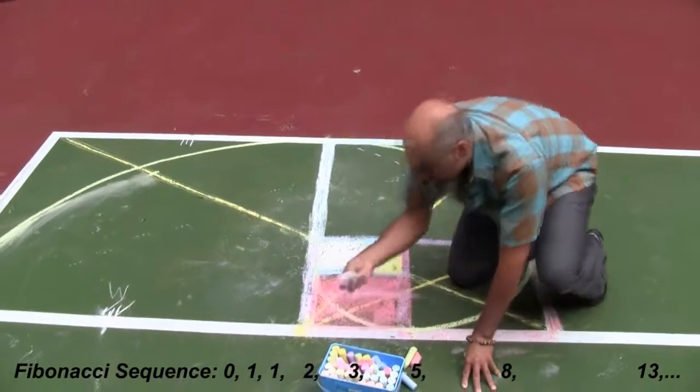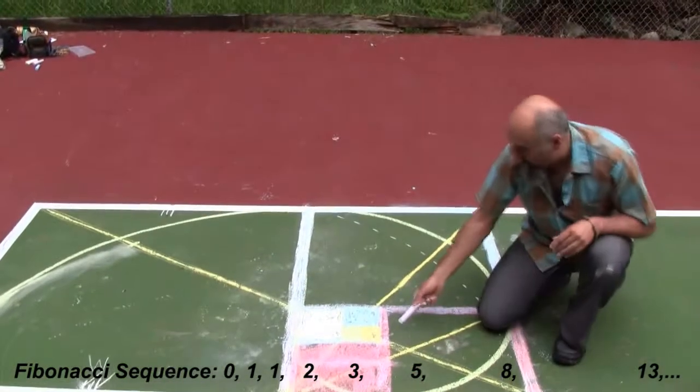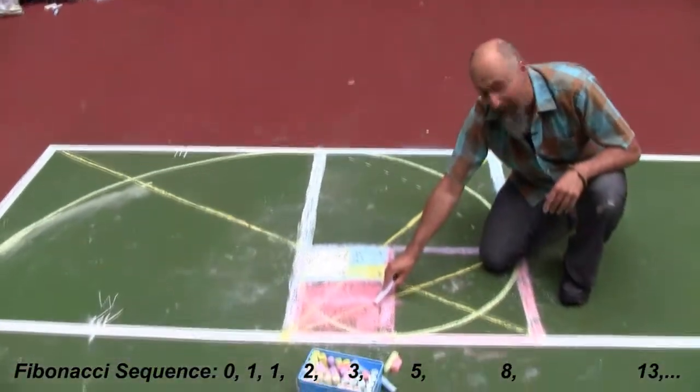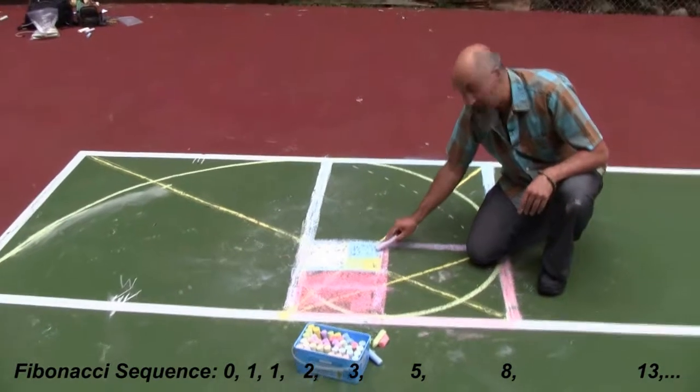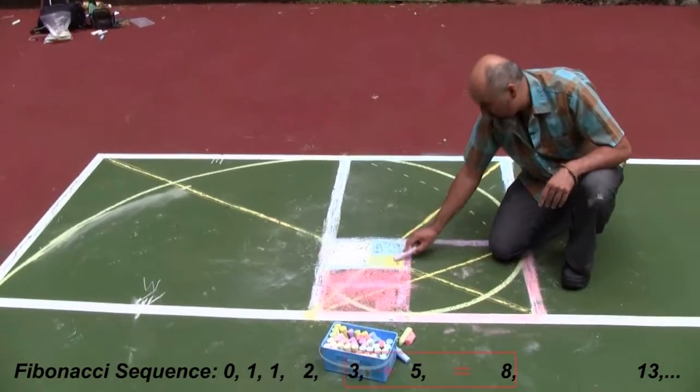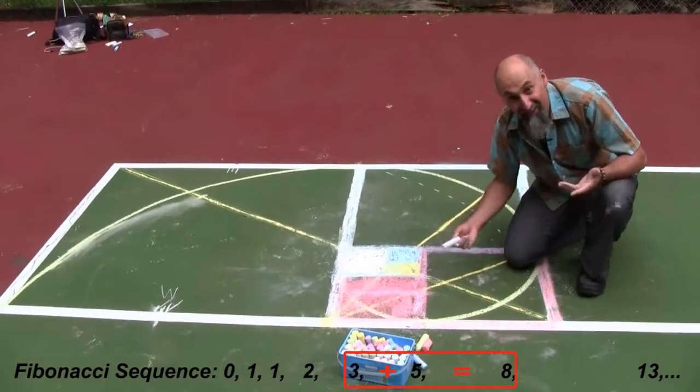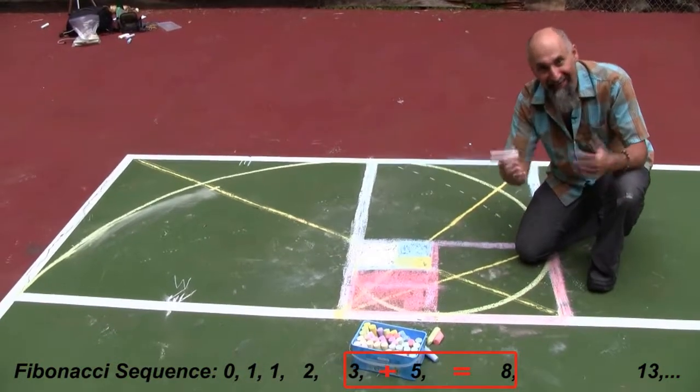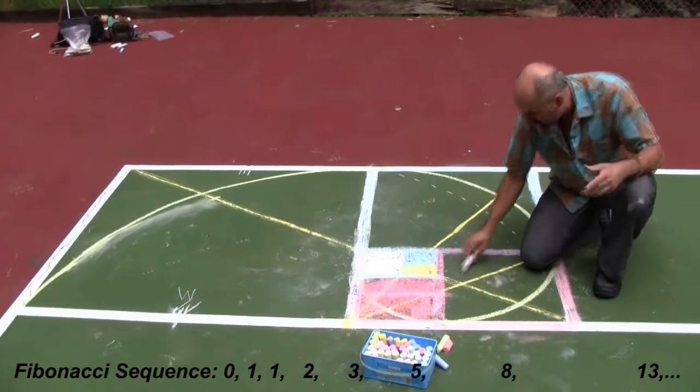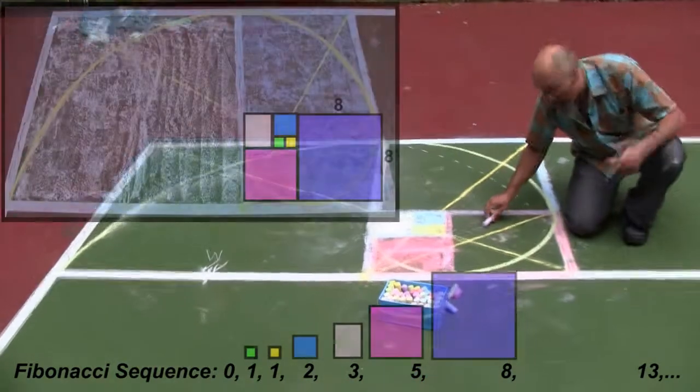For the next one, I'll use purple. So what we got for the next one is, this is a five by five square. This is a one. This is a two by two. So two plus one plus five, that gives us an eight, right? Because five plus three is eight. That's the next number in the Fibonacci sequence. And this guy becomes an eight by eight box.